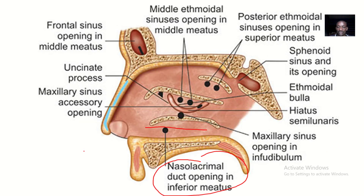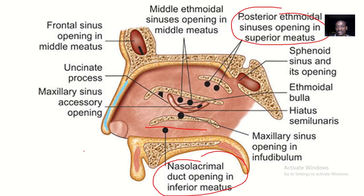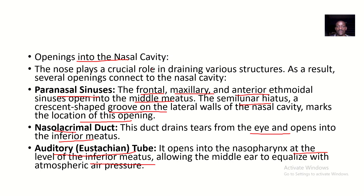And how about the posterior ethmoidal air sinus? The posterior ethmoidal air sinus opens into the superior meatus.